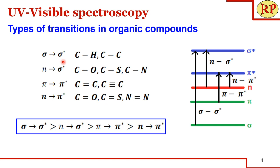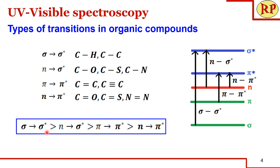Sigma to sigma* means there is only a single bond without any hetero atom, like C–H or C–C. N to sigma* means there is a hetero atom with a lone pair but only a single bond — like C–O, C–S, C–N, etc. Pi to pi* means there is a multiple bond but no hetero atom, like C=C or C≡C. N to pi* means there is both a multiple bond and a hetero atom, like C=O or C=S. The highest energy is required for sigma to sigma* and the lowest for n to pi*.